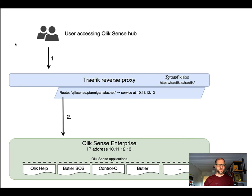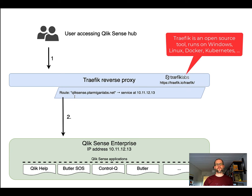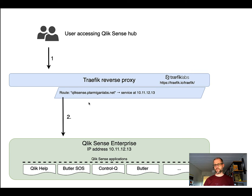The concept behind these is that we have the traffic reverse proxy. Starting with the user accessing the Sense Hub — that's the first basic scenario, a regular access to Sense. Any access to Sense.PetarmingenLabs.net will first go to the traffic reverse proxy. The reverse proxy has a rule that says if the URL is ClickSense.PetarmingenLabs.net, forward this traffic to the service at IP address 10.11.12.13 — a made-up IP address. The network traffic is forwarded to Qlik Sense Enterprise where the various applications are found. This is what happens when a user accesses the hub or any regular app on the Sense server, for example the Minecraft app.